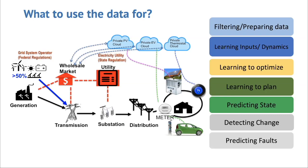So where do we use this data in this future grid? I made a list in the slides. You can group it into a few categories. The first real category is to learn about the different devices, the network, and the dynamics of the system. There's a lot of that to be done, and it's right now one of the hot topics of research in this area.